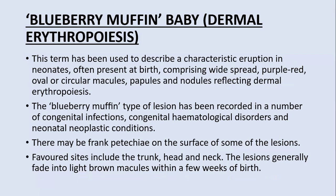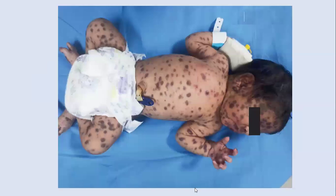Blueberry muffin baby, or dermal erythropoiesis. This term describes a characteristic eruption in neonates, often present at birth, comprising widespread purple-red oval or circular macules, papules, and nodules reflecting dermal erythropoiesis. The blueberry muffin type of lesion has been recorded in congenital infections, congenital hematological disorders, and neonatal neoplastic conditions. There may be frank petechiae on the surface of some lesions. Favored sites include the trunk, head, and neck. The lesions generally fade into light brown macules within a few weeks of birth.